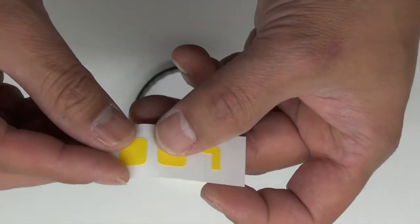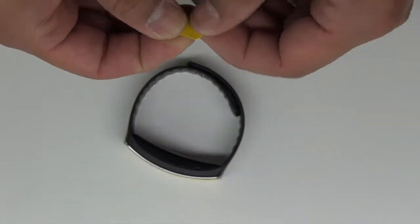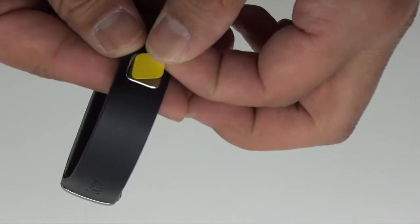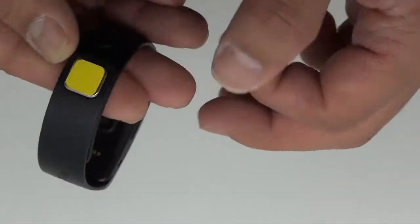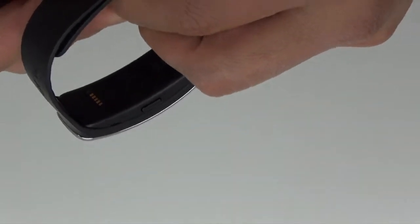Now that we have the first part of our installation done, we're going to install the clasp part of the Gear Fit. This part is just as easy as the bezel. All you have to do is evenly place it onto the clasp.